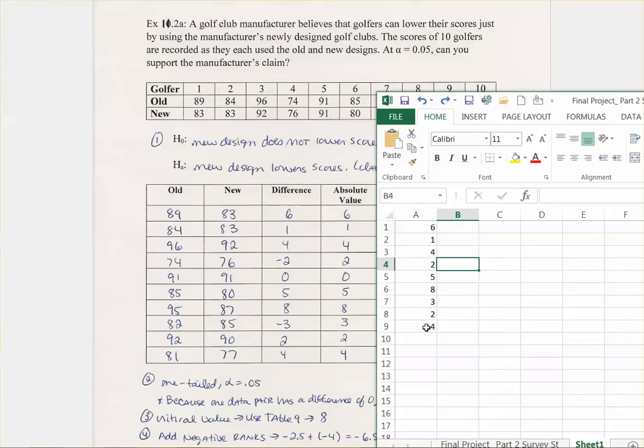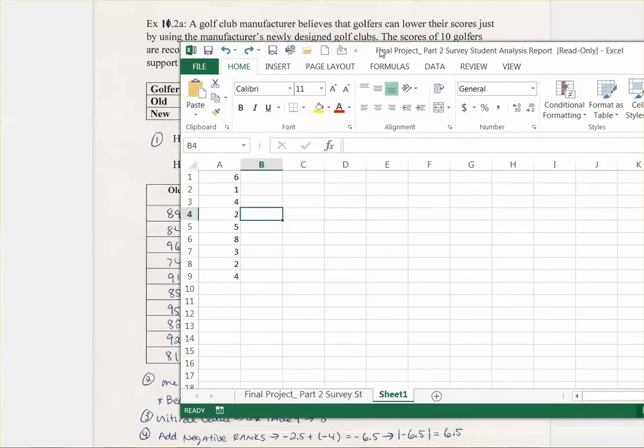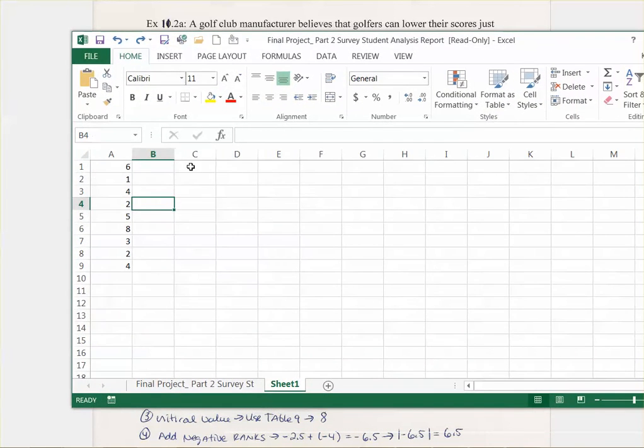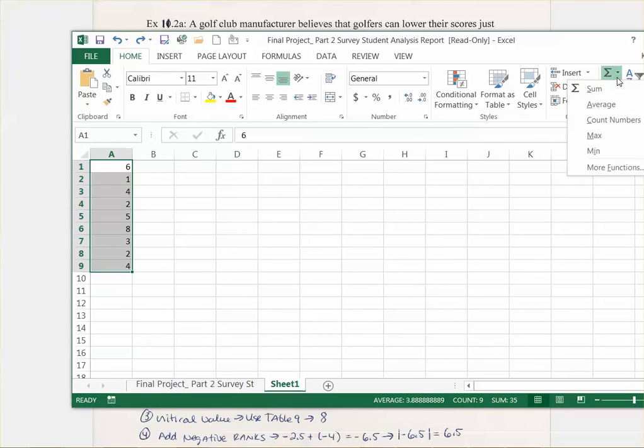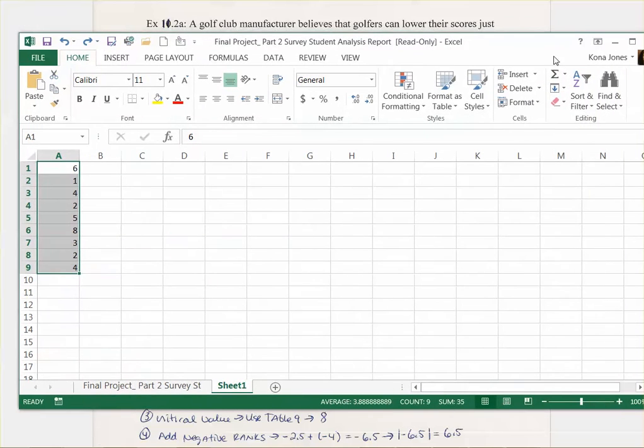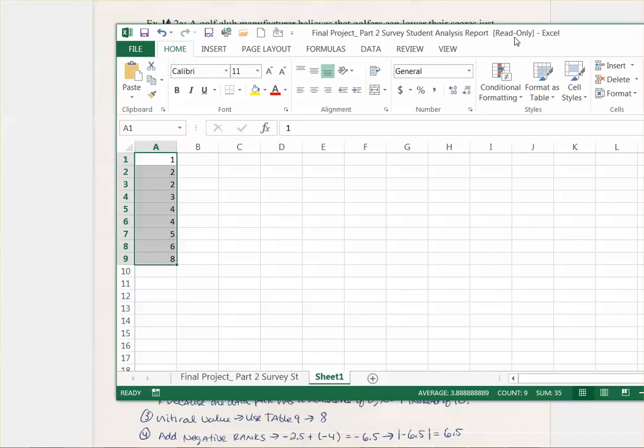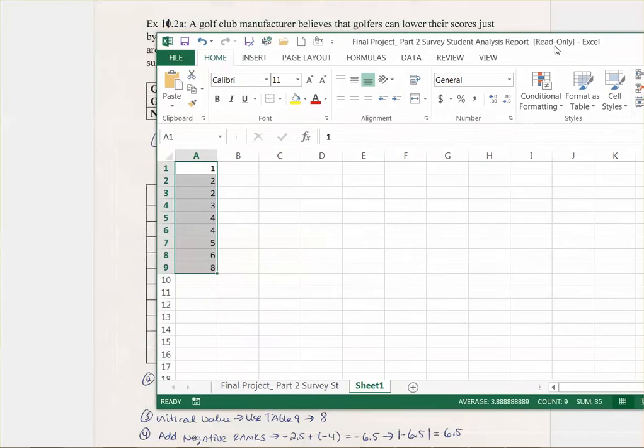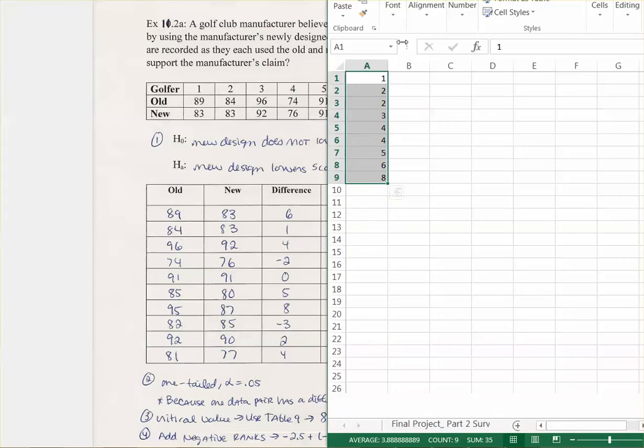So there's all of the numbers, and what you want to do, and this just makes your life easier, and you don't have to do this in Excel. I just did it because it was easier for me. You can do this on paper. It's just basically order it from smallest to largest.